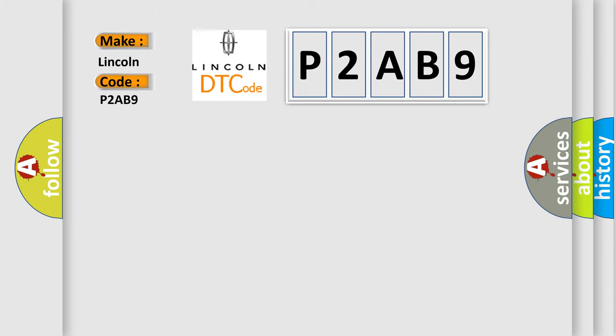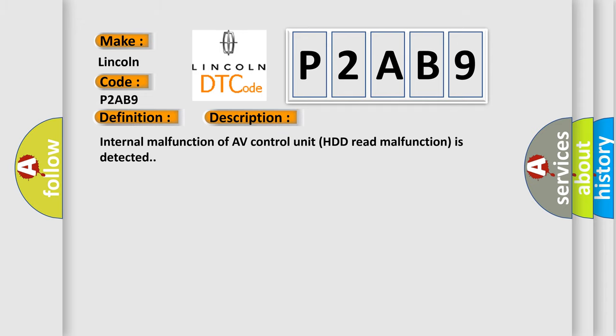Lincoln car manufacturer. The basic definition is AV control module HDD read. And now this is a short description of this DTC code: Internal malfunction of AV control unit, HDD read malfunction is detected.